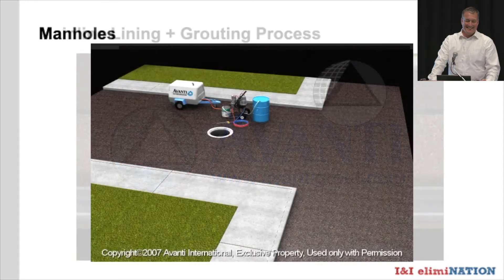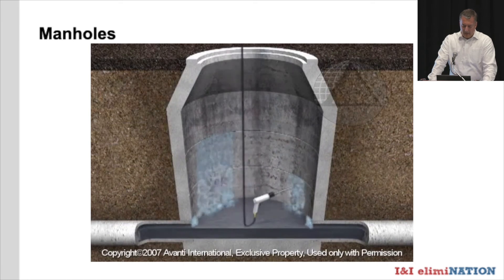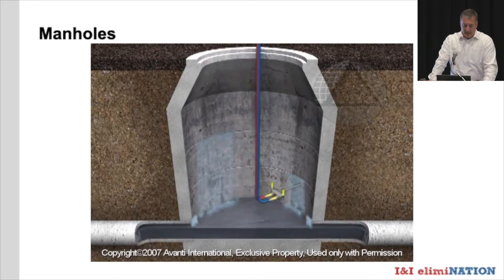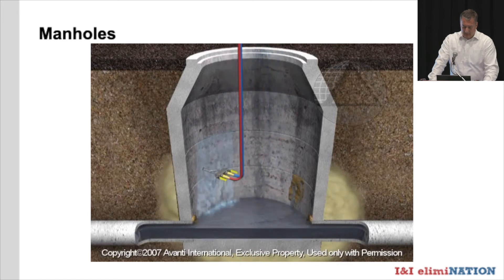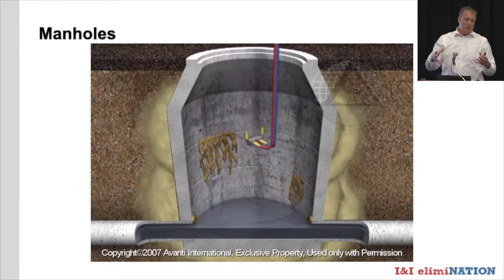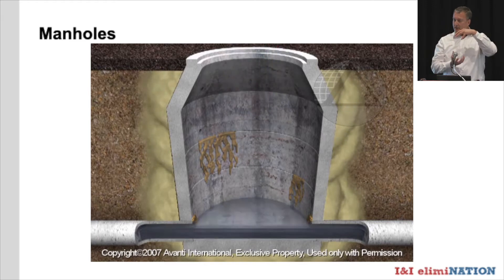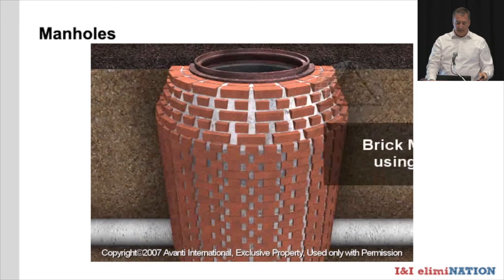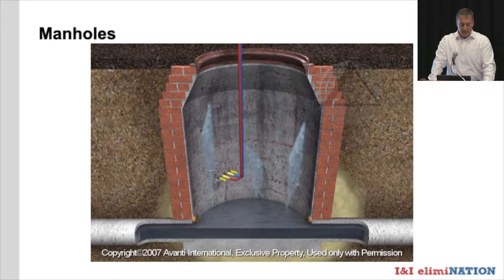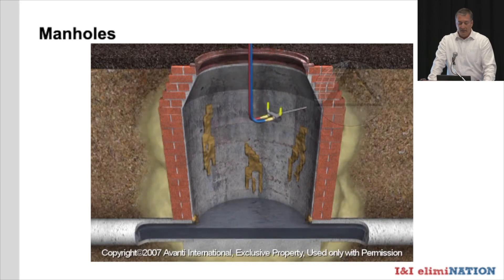Manholes are definitely a key asset to controlling infiltration. What we can do is curtain-grout a manhole, or target the joints within the manhole. Grout will be pumped in behind the manhole wall creating a curtain — a great way to think about it is like a koozie around a soda pop, creating that barrier around the manhole. If you think of a manhole like a Pepsi or Coke can, you're creating that koozie on the outside. That can be an acrylic gel or a urethane grout, depending on contractor preference or the municipality's preference.